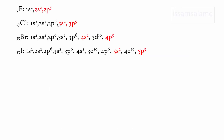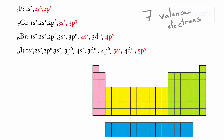If we look at the electronic configuration for the following elements, as you can see, all of them end with P5. It means that all of them belong to the same group, which is group 17. If we count the number of electrons in their outer shell, we can see that all of them have seven valence electrons in their outer shell. So as I told you, elements of the same group share the same number of valence electrons.